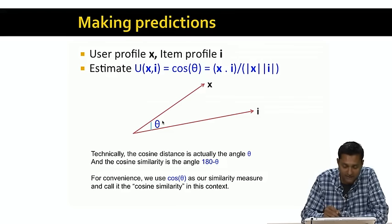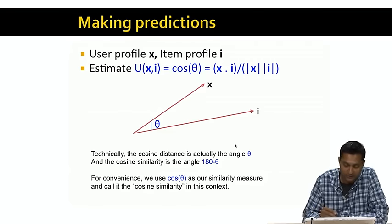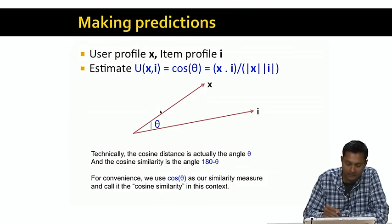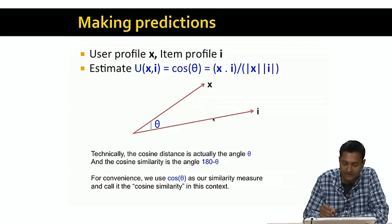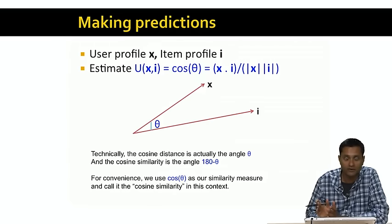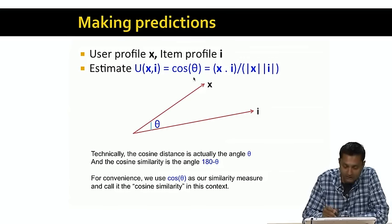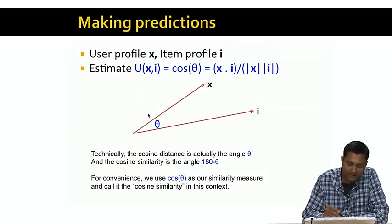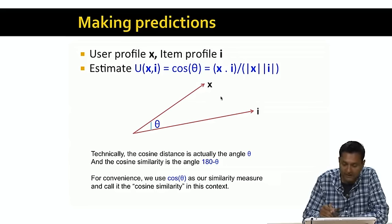Technically, the cosine distance is the angle theta, and the cosine similarity is 180 minus theta. As the angle becomes smaller, x and i are more similar to each other. For convenience, we use cosine of theta as our similarity measure. As the angle theta becomes smaller, cosine theta becomes larger. As theta becomes larger, cosine becomes smaller — and in fact, as theta exceeds 90 degrees, cosine becomes negative. This captures the intuition that as the angle becomes smaller, x and i are more and more similar, and it's more likely that x will give a high rating to item i.